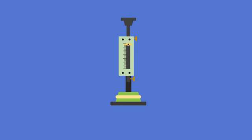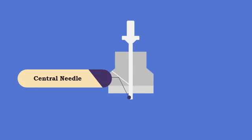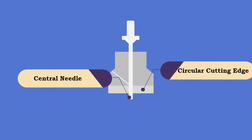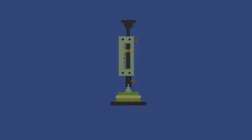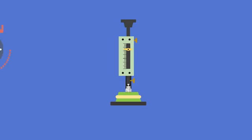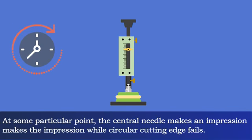Final Setting Time: Replace the needle of the VCAT apparatus with a circular attachment. This attachment has two portions: a central needle and a circular cutting edge. Upon lowering the circular attachment repeatedly at equal intervals, at some point the central needle makes an impression while the circular cutting edge fails.